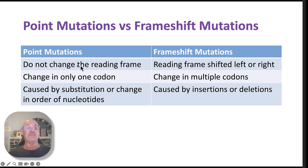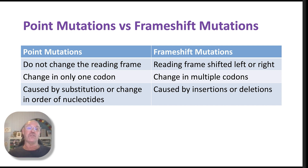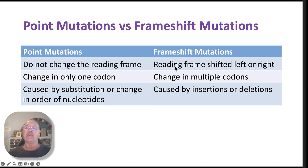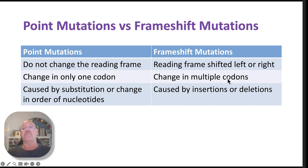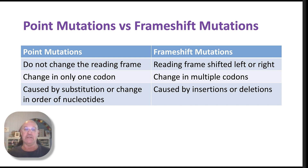Here's a brief summary of the difference between point mutations and frameshift mutations. With a point mutation, there's no change in the reading frame because only one codon changes — it's caused by a substitution, not a change in the number of nucleotides. With a frameshift mutation, the reading frame shifts left or right, affecting multiple codons, and it's caused by insertion or deletion of nucleotides.